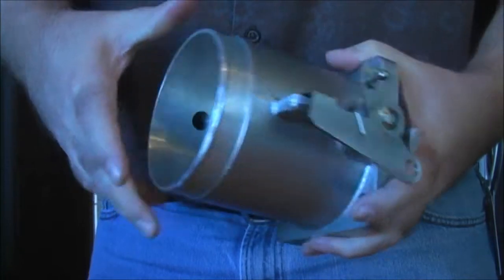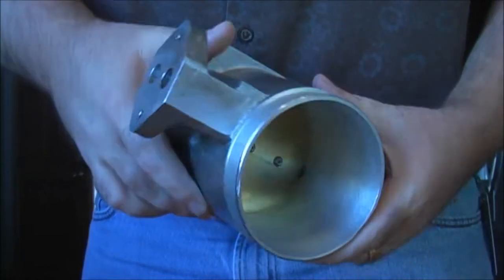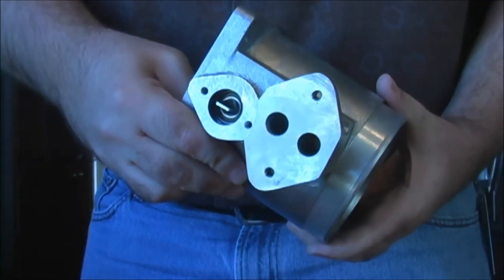So there you have it. This is the Magnum Power 95 millimeter throttle body for the Ford Thunderbird Super Coupes.